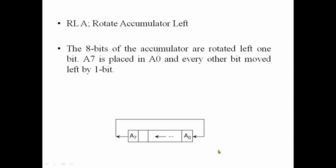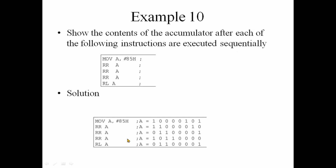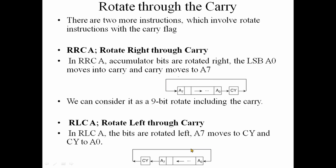The second rotate direction is rotate left. If we rotate left, then bit A7 wraps around. The instruction is RL A — rotate left. For example: MOV A, 85H. 85H is 1000 0101 in binary. The next step is to apply the rotate — we rotate left.